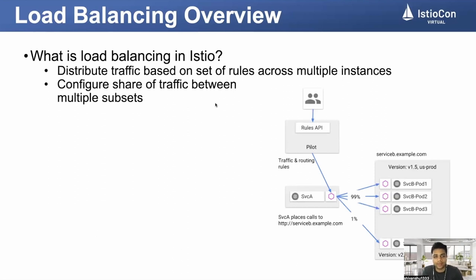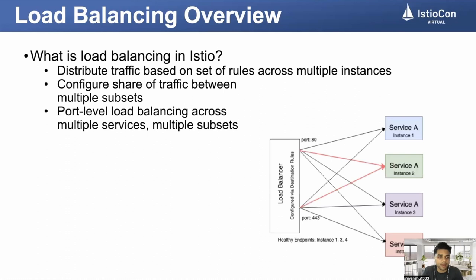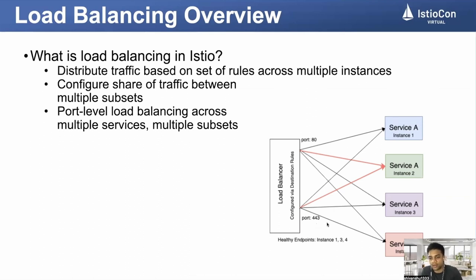There could be a requirement of splitting traffic between a staging environment or a production environment. I can configure that and distribute traffic between production environments using load balancing settings. There could also be a use case of distributing traffic differently for different ports. For example, for port 80 I may want traffic distributed in a round robin fashion among different instances of a service, and for port 443 I may want consistent hashing for traffic distributed across different instances of service.